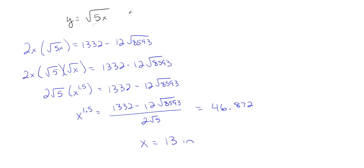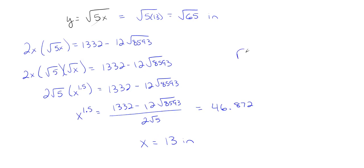Now that we know X is 13, we can determine Y because Y is just the square root of 5 times 13, which gives us the square root of 65 inches — that's the height of our triangle. And let's get our radius of our semicircle, which is X plus 5 divided by 2, so 13 plus 5 divided by 2, which is exactly 9 inches.